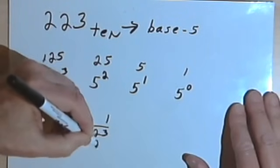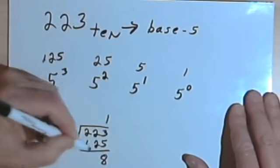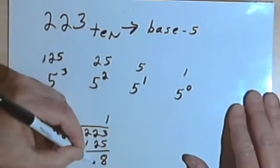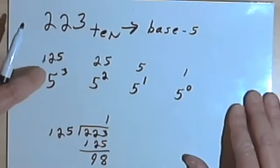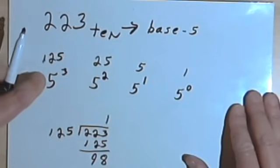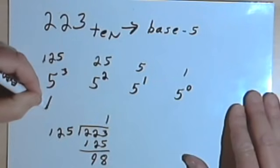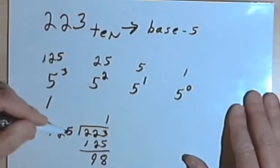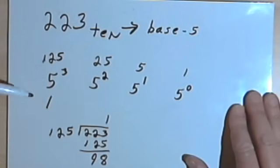It looks like it goes in one time. I want to find out what the remainder is — the remainder is 98. So I know that in the 5 to the 3rds column, I've got a 1, because 125 went into 223 one time.